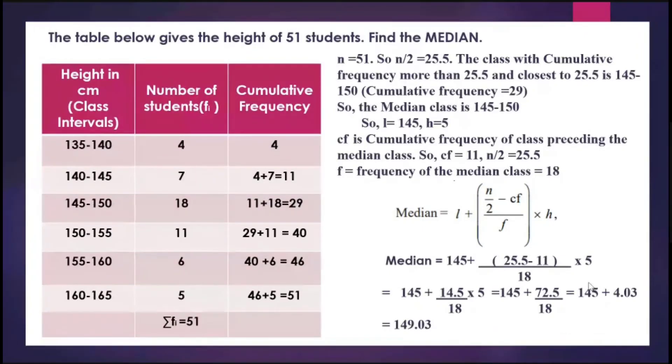Again, the answer statement is important. You need to write the median equals 149.03 centimeters. I hope you have understood the conversions of cumulative frequency tables to normal frequency distribution tables, and how to find the mean, mode, and median through the five videos I have shared with you. I hope it will be helpful. Thank you so much.